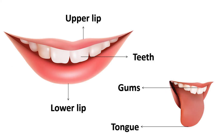We have two lips — upper lip and lower lip. We have 32 teeth to chew food. We have one tongue to taste and to speak.